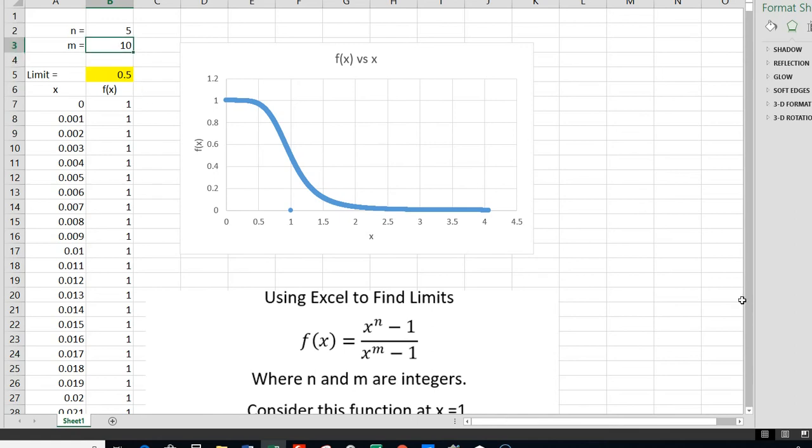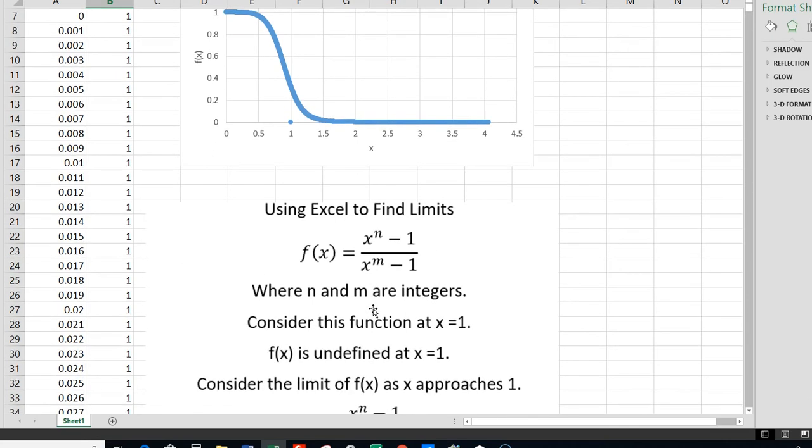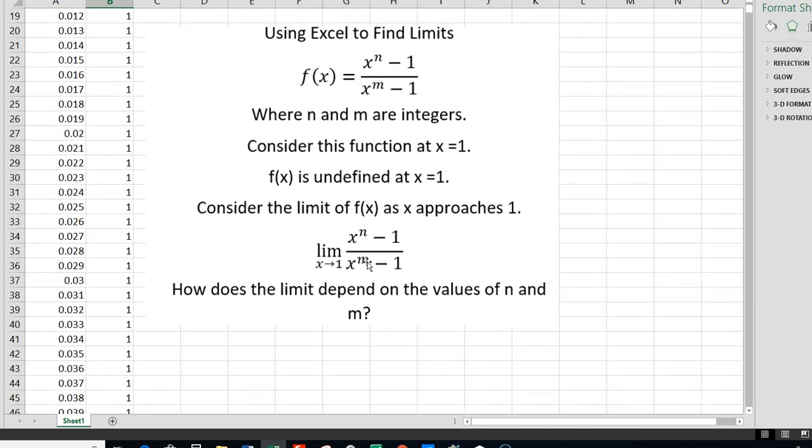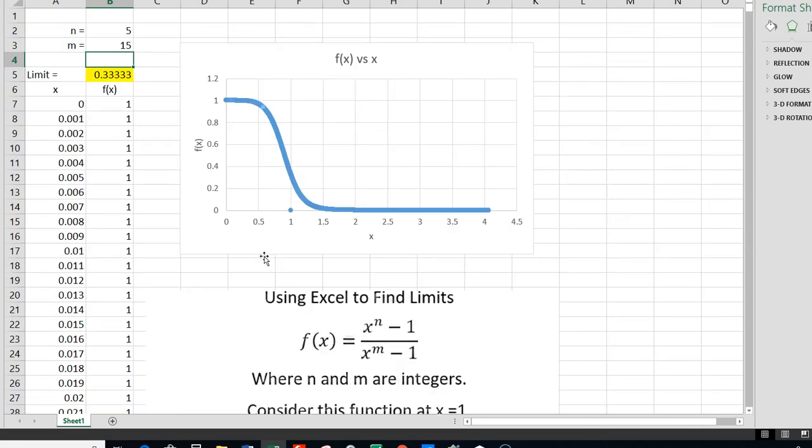Let's go 10 and 15. Well, 10 and 15 is 1 third, right? 5 and 15, I'm sorry, is 1 third. So it works. Every time it's worked so far. So thank you for your attention. And maybe I'll come back to this another time. Showing mathematically using calculus why the limit of this function is n over m. Thank you.